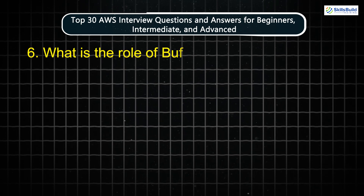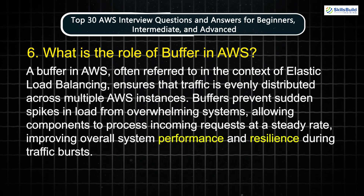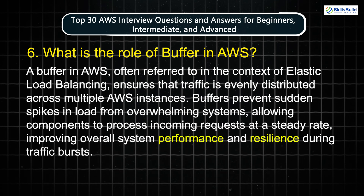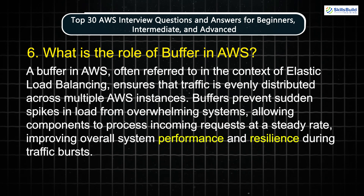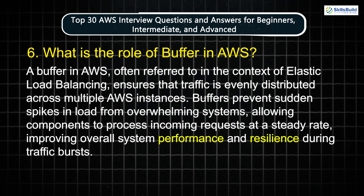Question 6: What is the role of buffer in AWS? A buffer in AWS, often referred to in the context of elastic load balancing, ensures that traffic is evenly distributed across multiple AWS instances. Buffers prevent sudden spikes in load from overwhelming systems, allowing components to process incoming requests at a steady rate, improving overall system performance and resilience during traffic bursts.